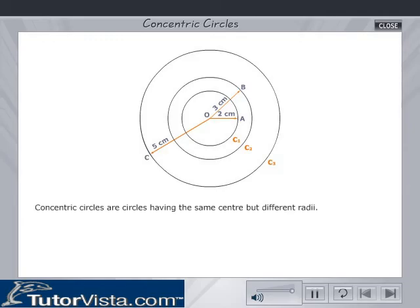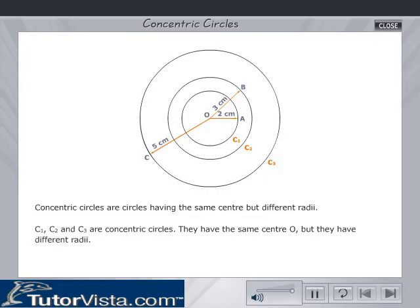Concentric circles are circles having the same center but different radii. Here, in the given figure, we observe that the three circles C1, C2 and C3 have the same center O but different radii. OA not equal to OB is not equal to OC.